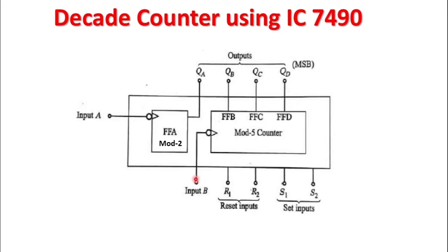So in that case, mod 2 and mod 5 in combination will cause this counter to act as a mod 10 counter, and the mod 10 counter will give its output on QA, QB, QC, and QD pins.